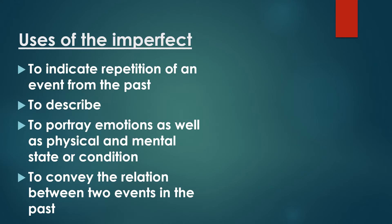As in Romance languages as well as Latin, from which these languages take their roots, the imperfect tense has some specific scenarios when it is likely to be used. Here are four important ones: firstly, to indicate repetition and continuity of an action that was happening, used to happen, or regularly happened in the past as it was ongoing; secondly, to describe people, things, or conditions of the past; thirdly, to indicate emotions as well as a physical or mental state or condition; and finally, to indicate the relation between two events in the past.